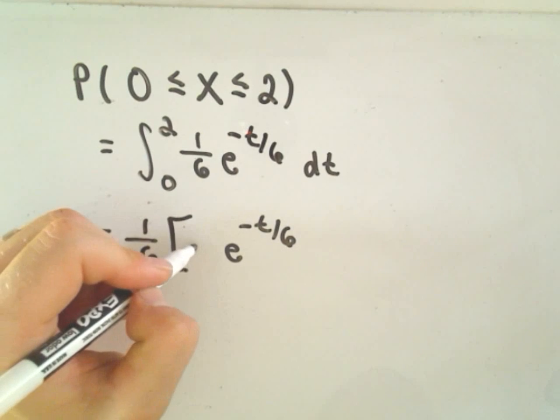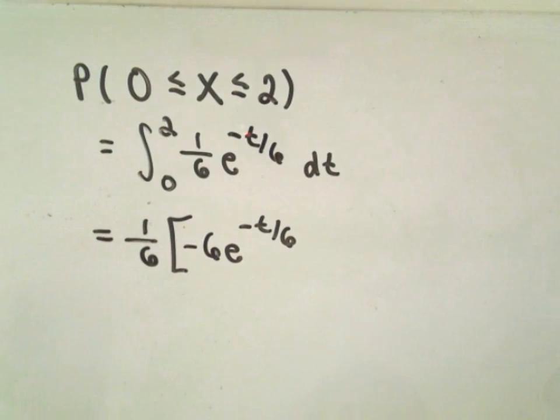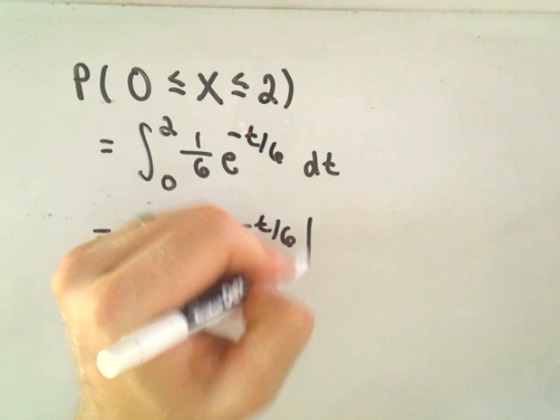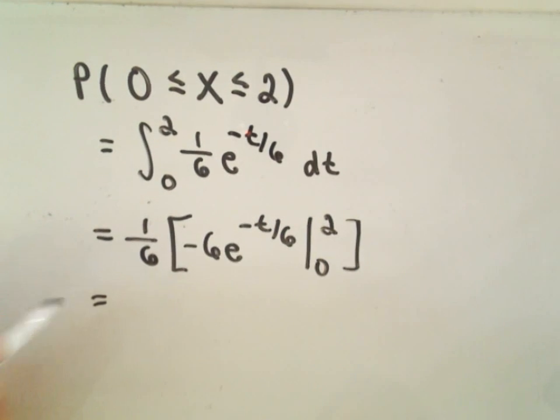And you can verify that using a u-substitution. So dividing by negative one-sixth is equivalent to multiplying by negative six. So again, you can verify that using a substitution.